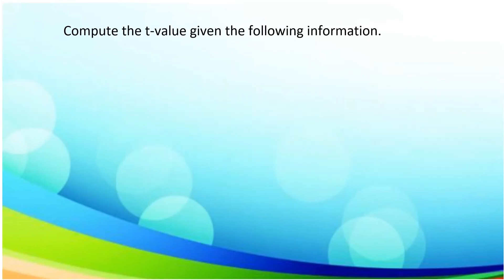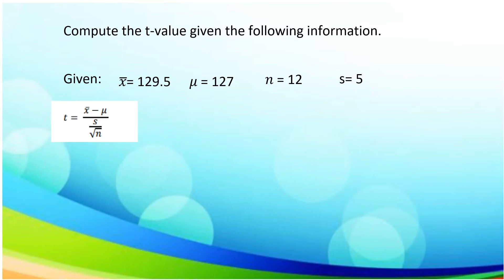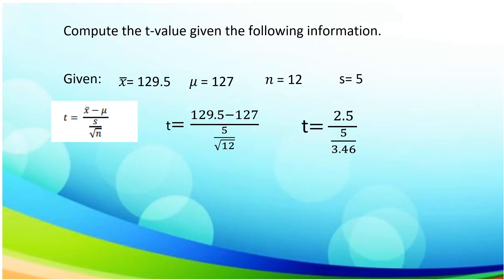Now let us compute the T-value given the following information. Given: x-bar is 129.5, mu is 127, n is equal to 12, and s is equal to 5. Using the formula, we substitute: 129.5 minus 127 divided by the quotient of 5 and the square root of 12. 129.5 minus 127 is 2.5, and the square root of 12 is 3.46. Dividing 5 by 3.46, we have 1.44. So, 2.5 divided by 1.44, the T-value is 1.736.